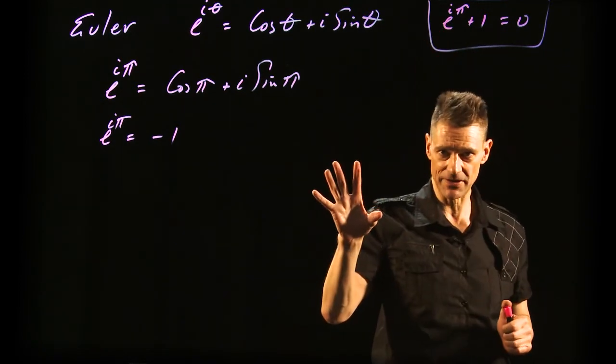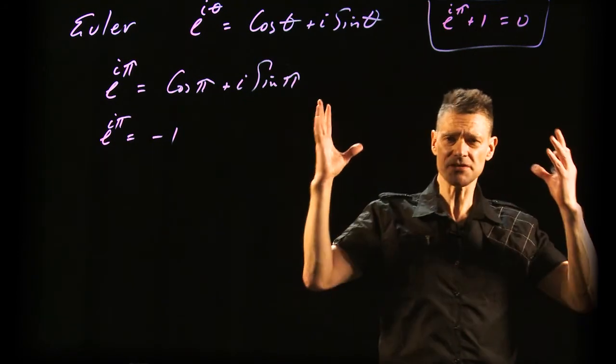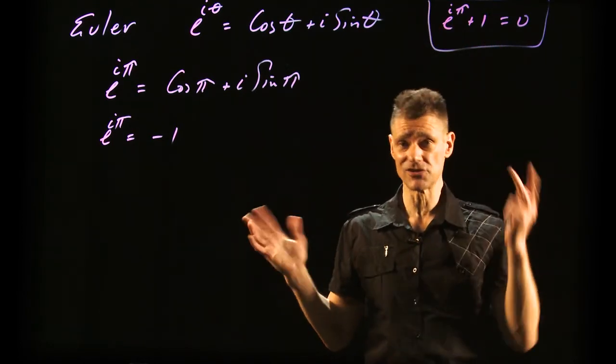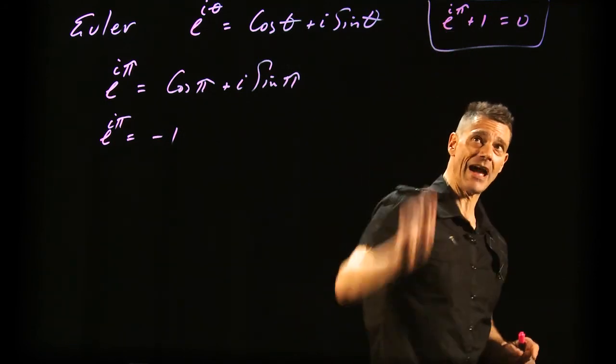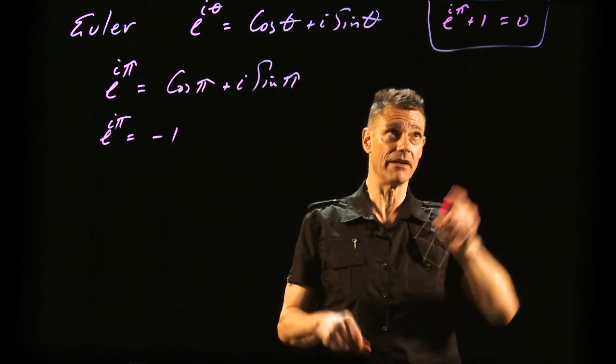e is a transcendental number showing up in natural logarithms, logarithmic spirals—so many places. π, everything associated with circles, shows up in weird places you wouldn't suspect. i, the imaginary number. Then 1, the first integer, the first unit, and zero.